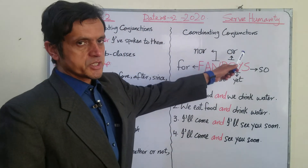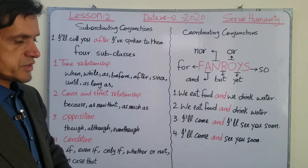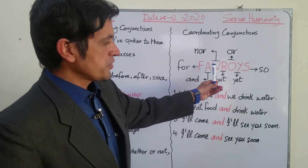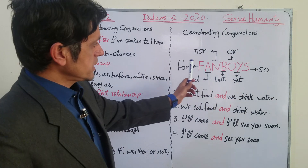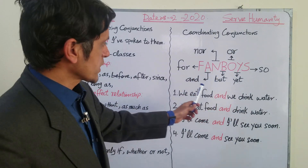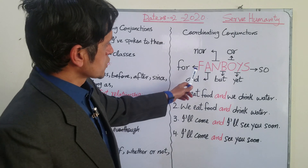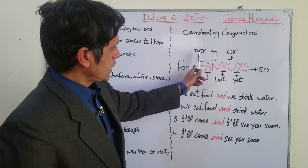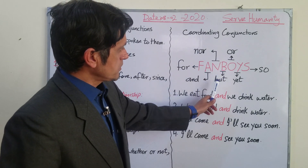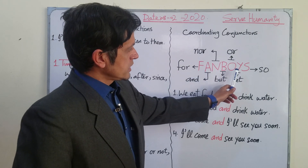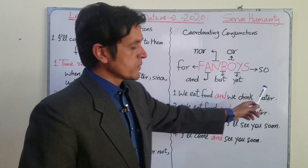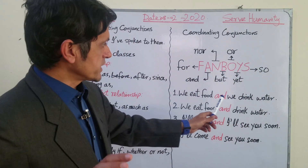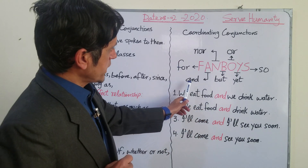For coordinating conjunctions we have an acronym called FANBOYS. In this acronym every letter stands for a certain conjunction word. F stands for 'for', A for 'and', N for 'nor', B for 'but', O for 'or', Y for 'yet', and S for 'so'. All these seven words are coordinating conjunctions.